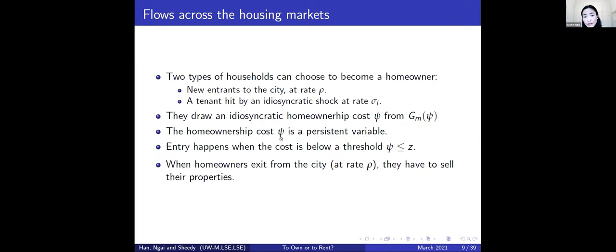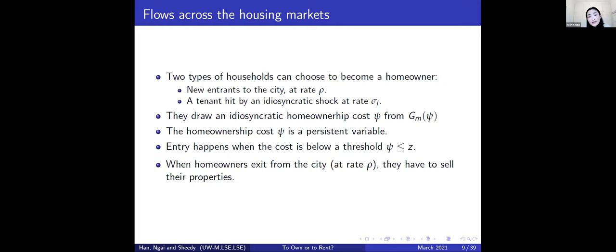The household draws a home ownership cost from a distribution, which is persistent until the next credit shock arrives — analogous to a mortgage affordability constraint that stays fixed until the next income change. In equilibrium, a household becomes a homeowner if this cost is below a threshold z, which is endogenously determined. The key impact of the transaction tax is that it shifts this threshold.